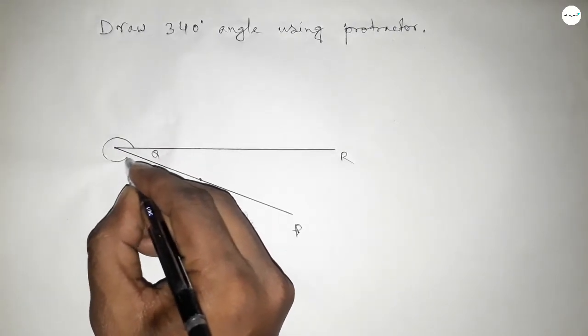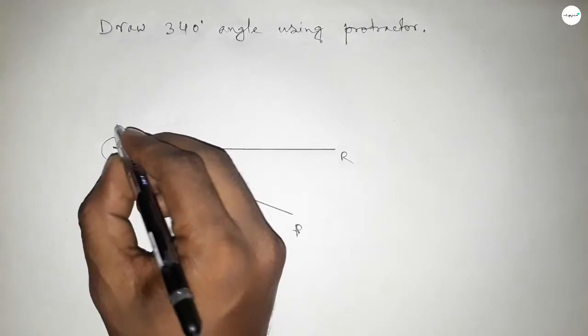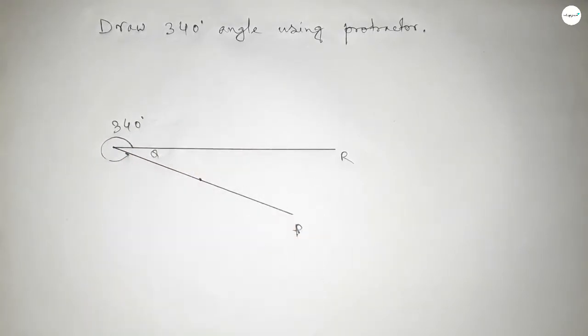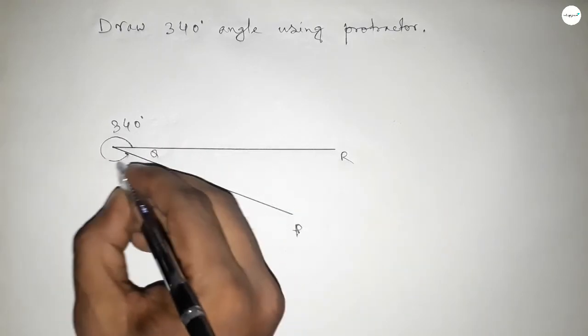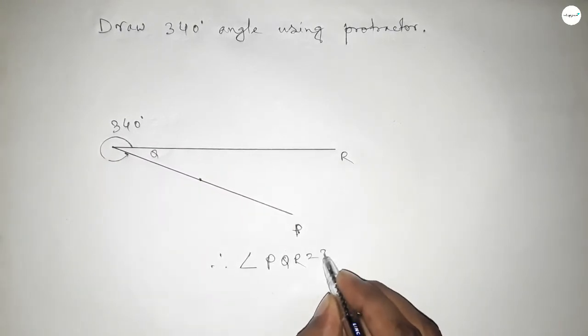This is angle PQR and this is 340 degrees. Therefore, angle PQR equals 340 degree angle.